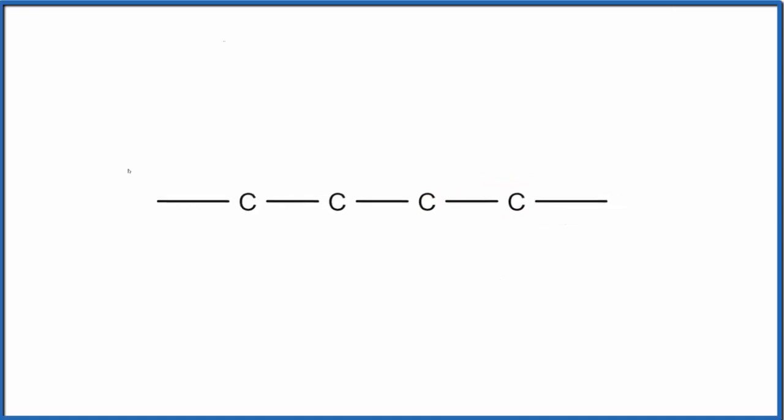So this is our chain of 6 carbons, and you can see that pretty clearly here with this. 1, 2, 3, 4, 5, 6.